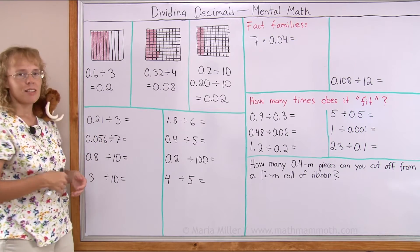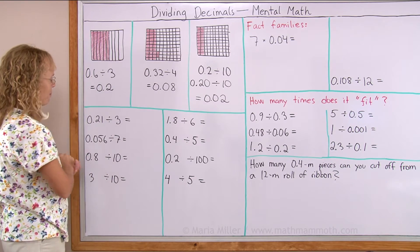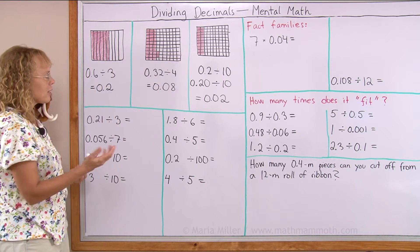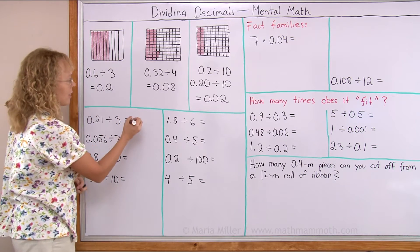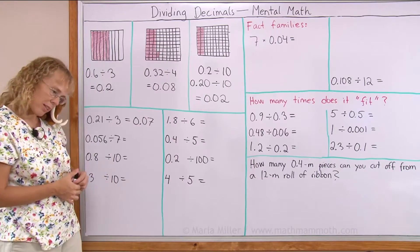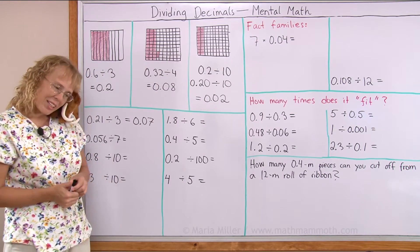Here I have twenty-one hundredths divided by three. So I just think twenty-one divided by three equals seven. And my answer will be in hundredths, so I write seven hundredths. What is it, Mathie? Oh yeah, right.